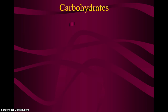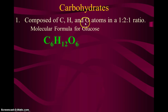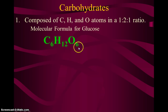A carbohydrate is going to be composed of three elements: carbon, hydrogen, and oxygen. They always form in a one-to-two-to-one ratio, meaning every one carbon bonds with two hydrogens and one oxygen to make a carbohydrate. For example, glucose is C6H12O6 — you can divide all those numbers by six and it gives you a one-to-two-to-one ratio.